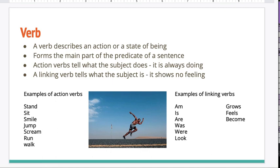Those are all things that we do. A linking verb tells what the subject is. It shows no feeling. For example, the word am. Am is a linking verb, like I am happy. Here are some others: is, are, was, were, looks, grows, feels, or become.